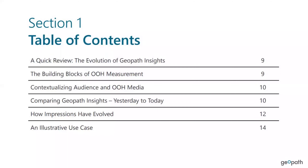The document shows how we build up to our current measurement and then addresses contextualizing audience in out-of-home media. We often get questions like, 'How do you know that 30% of people passing by this unit have been to Starbucks in the past 30 days?' — that portion tries to explain that. We also provide a checklist of yesterday to today, so you can see how the tools have evolved from current ADS and old plan functionality into what's available through the API and the Geopath Insights suite.